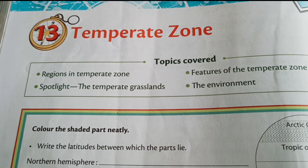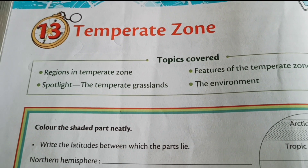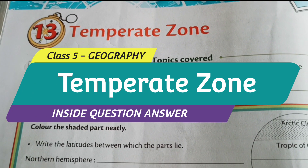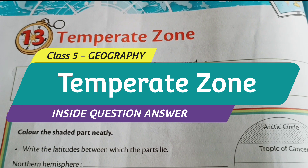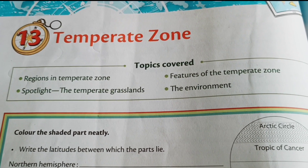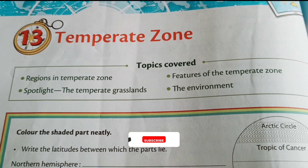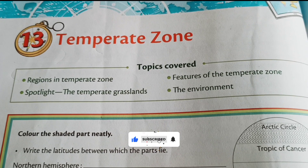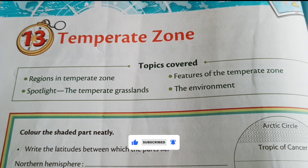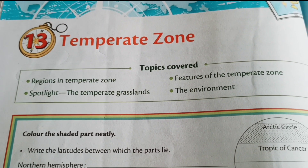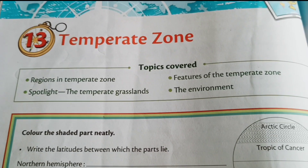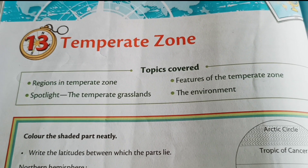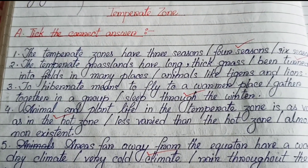Hello students, welcome to West Bengal English Freedom Guide. Today we are going to solve Chapter 13, Temperate Zone, from the Class 5 Geography book. We will solve the exercise and insight question answers from this chapter. Before we start, please like the video, subscribe the channel, and press the bell icon. Check the description box or playlist if you've missed any videos. Let's start.